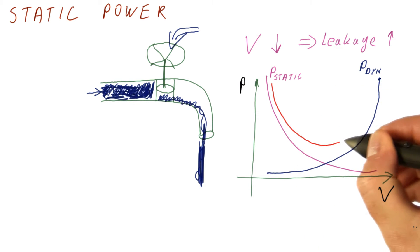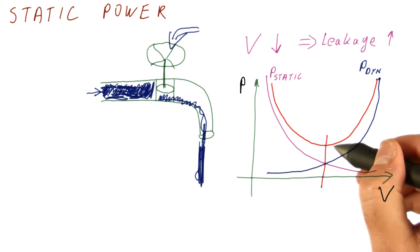So our total power does something like this. There is a voltage at which the overall power is lowest.